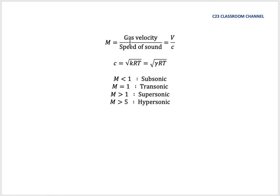We could say that gas velocity over speed of sound, or the symbol is V over C. And C here is the square root of kRT, where k is the specific ratio, R is the gas constant, and T is the temperature in Kelvin.